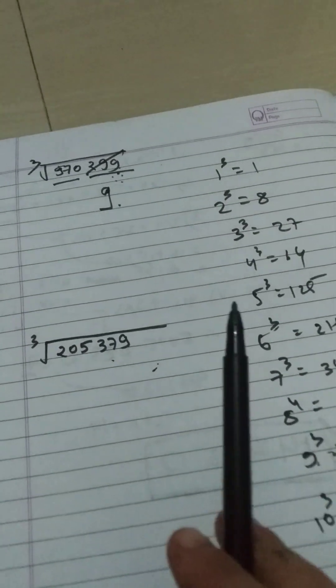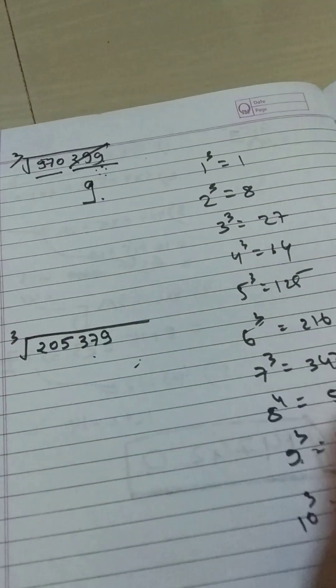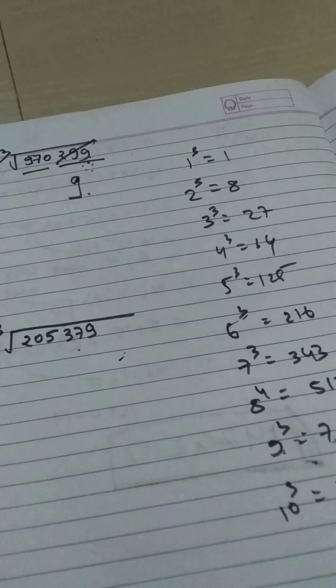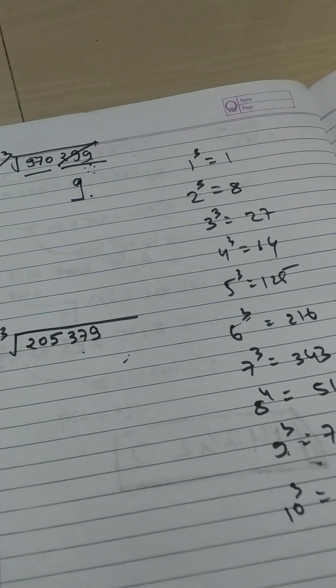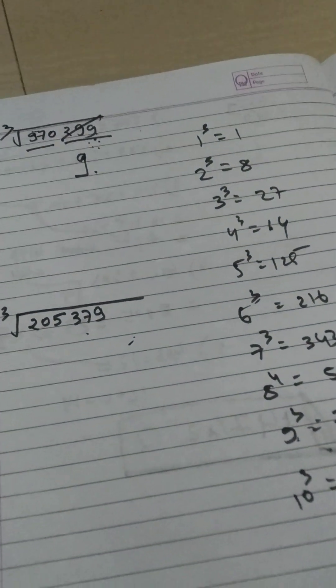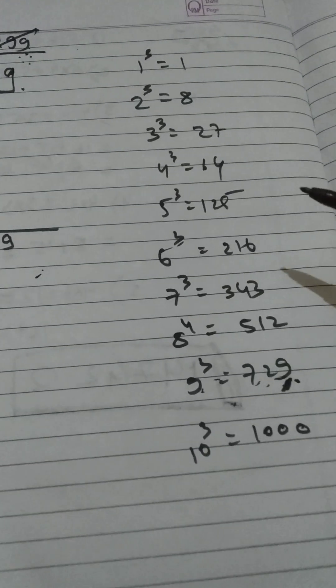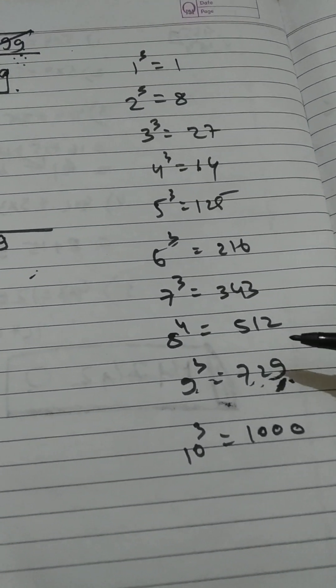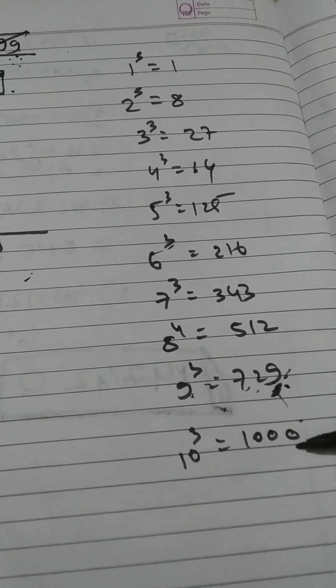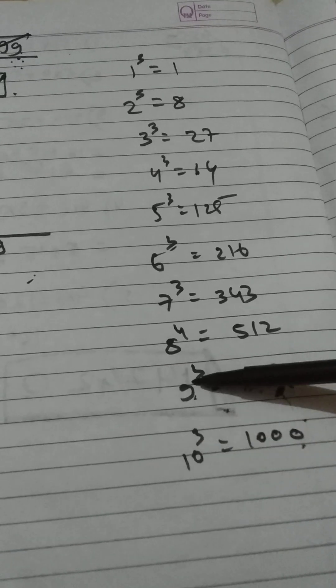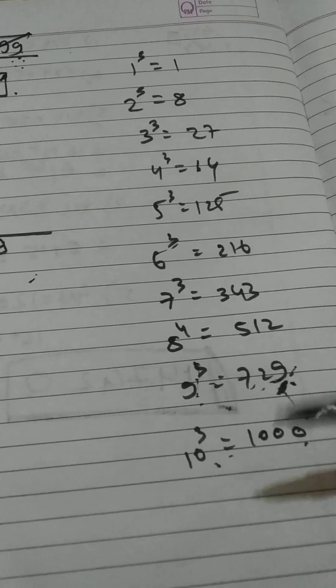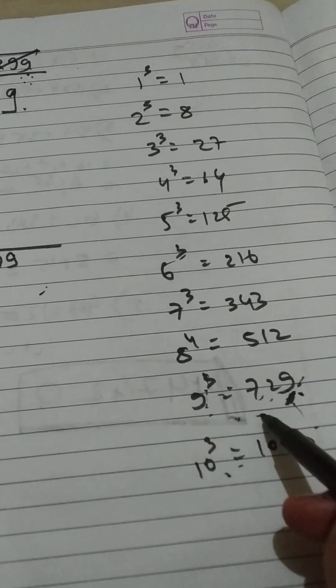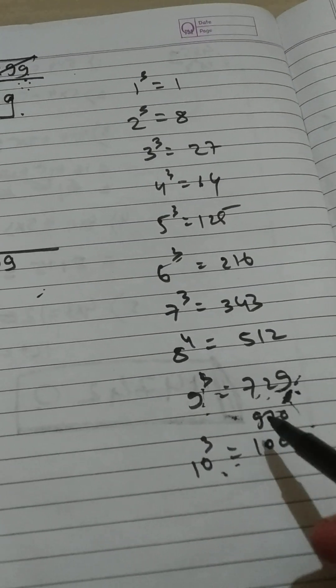Next we will see this number 970. We will see where 970 lies - in between which numbers. We see that 970 lies between 9³ and 10³.